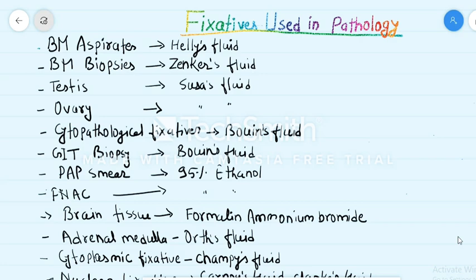Starting with fixatives used in bone marrow aspirates: Halley's fluid is used in bone marrow aspirates, while for bone marrow biopsies, Jenker's fluid is used.